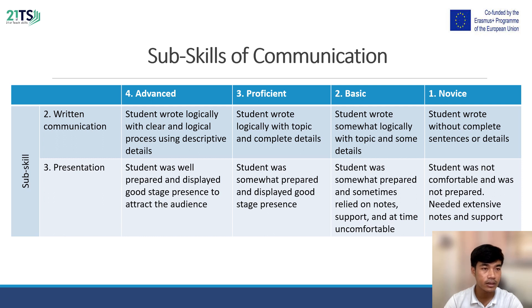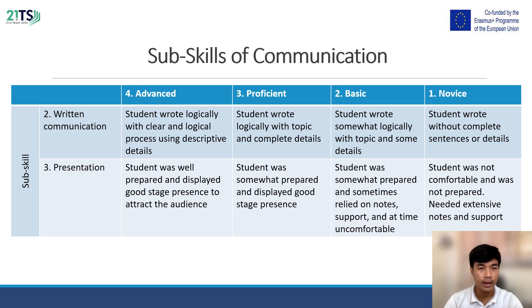Sub-skill two: Written Communication. At the advanced level, students wrote logically with clear and logical process using descriptive detail. At the proficiency level, students wrote logically with topic and complete details. At the basic level, students wrote somewhat logically with topic and some details. At the novice level, students wrote without complete sentences or details.